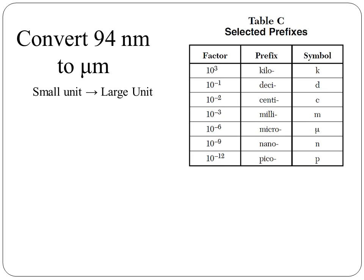If we want to convert from a small unit to a large unit, for example, convert 94 nanometers to micrometers, we are still going to look at reference table C for the exponent of the given and the find. The exponent for nano is 10 to the minus 9 and the exponent for micro is 10 to the minus 6. The difference between minus 9 and minus 6 is 3.